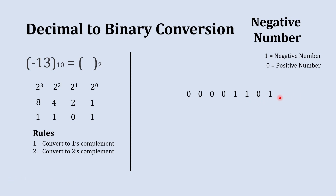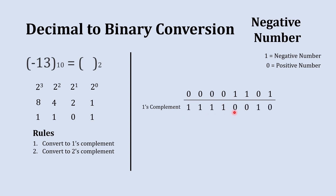The first step is to convert this into 1's complement. When we want to take 1's complement, it's very simple: wherever there is 0, write 1, and wherever there is 1, write 0. So this is the 1's complement of our number.